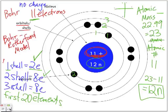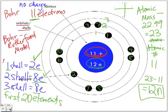That 11th electron on the third shell is a valence electron. Valence electrons are the electrons found on the outermost shell or outermost orbital. The outermost orbital here is orbital number 3 — there is no orbital 4 in this diagram since we're going to a maximum of 3 for sodium.